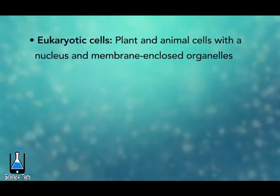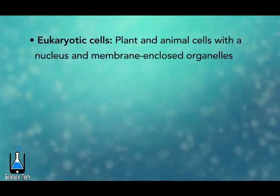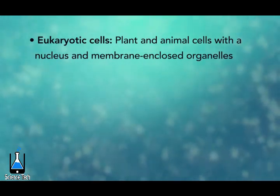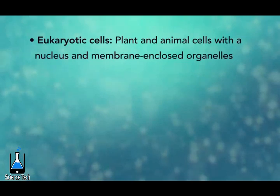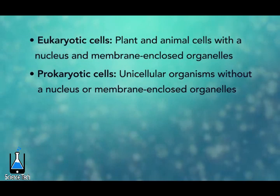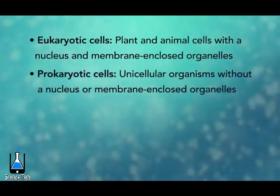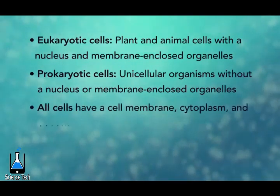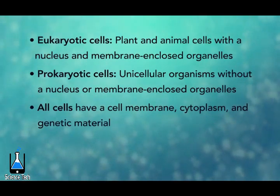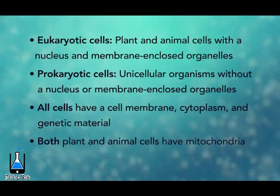In summary, remember, eukaryotic cells are plant and animal cells with a nucleus and membrane-enclosed organelles, while prokaryotic cells are unicellular organisms without these things. All cells have a cell membrane, cytoplasm, and genetic material. And even though only plant cells have chloroplasts, both plant and animal cells have mitochondria.